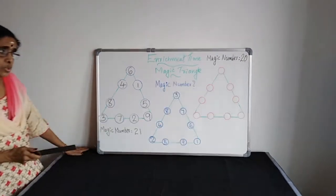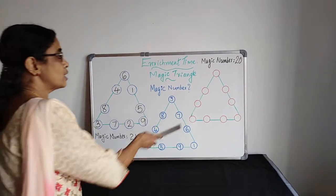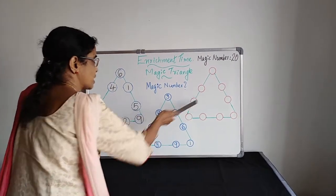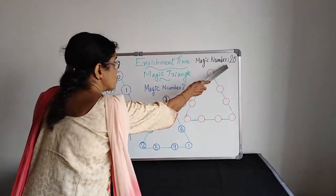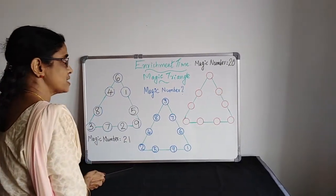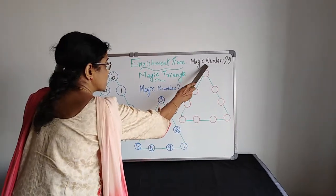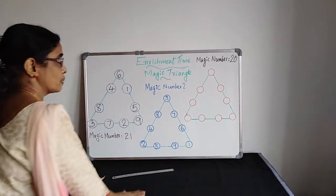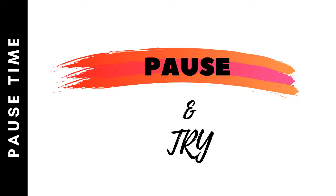Now you have to make a Magic Triangle. There, the Magic Number should be 20. You have to arrange the numbers in such a way that you are getting a Magic Triangle with Magic Number 20. Post the video here, enjoy and explore.